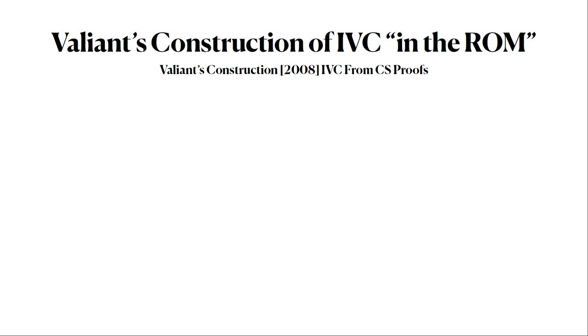Valiant initially came up with this primitive, this definition, and its construction is from CS proofs, normally in the random oracle model. Imagine you have some state zero to state one. I can compute a CS proof, like a snark, that this computation was done correctly. So for one step, it's easy.